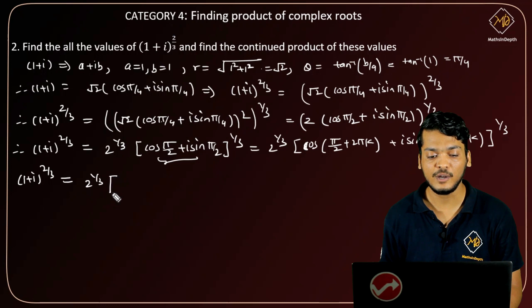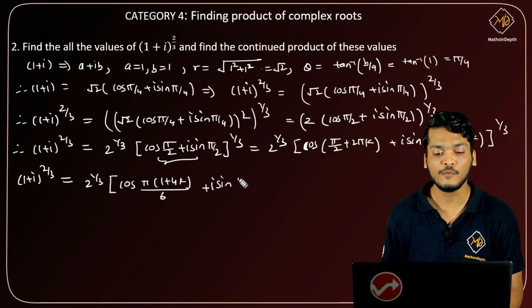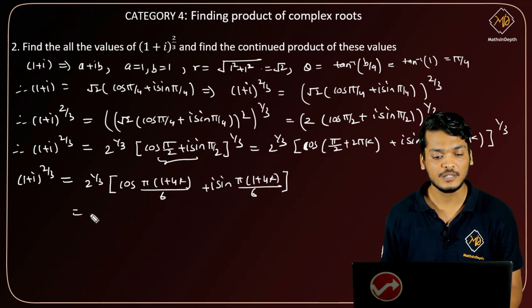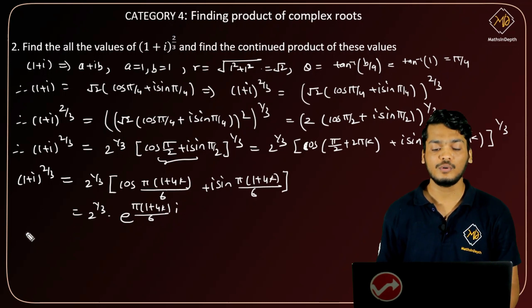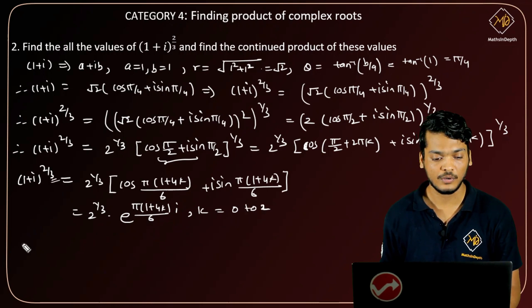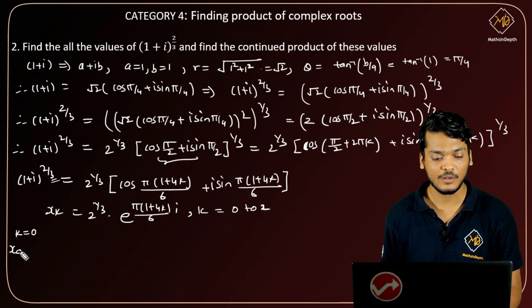Therefore (1+i)^(2/3) equals 2^(1/3) · cos(π(1+4k)/6) + i·sin(π(1+4k)/6), where k varies from 0 to 2 (i.e., k = 0, 1, 2).